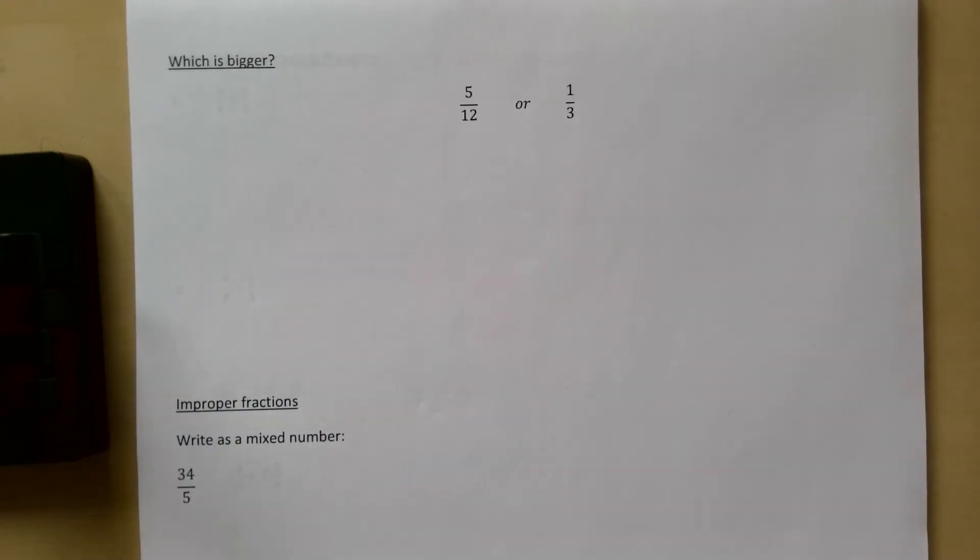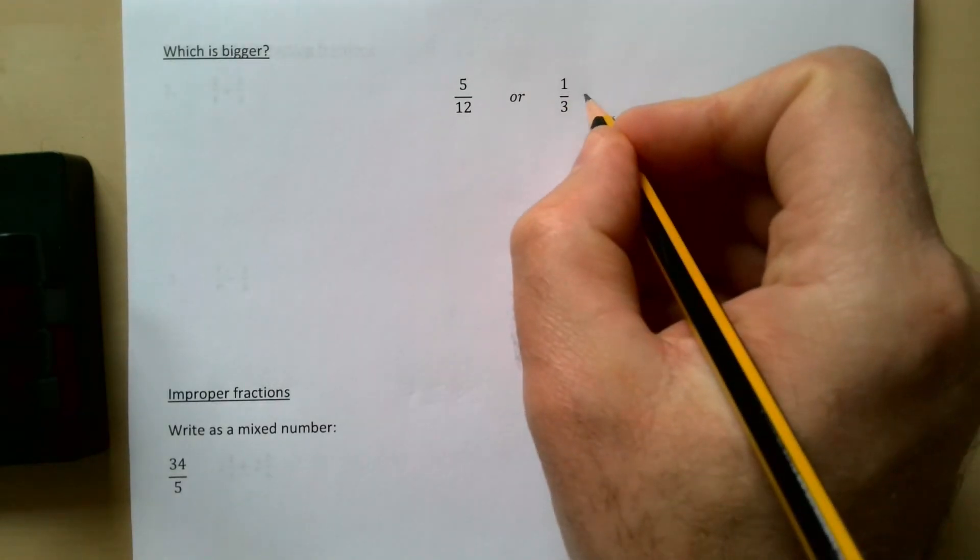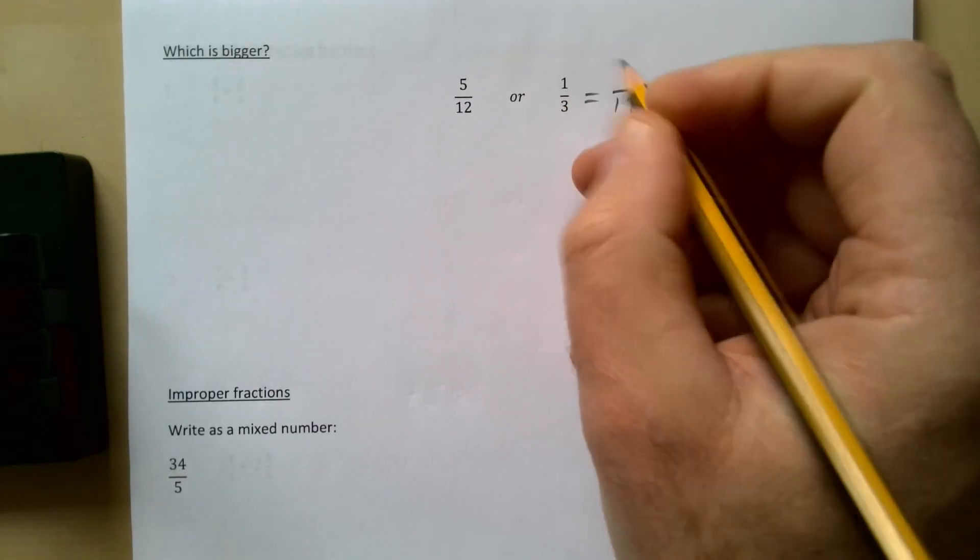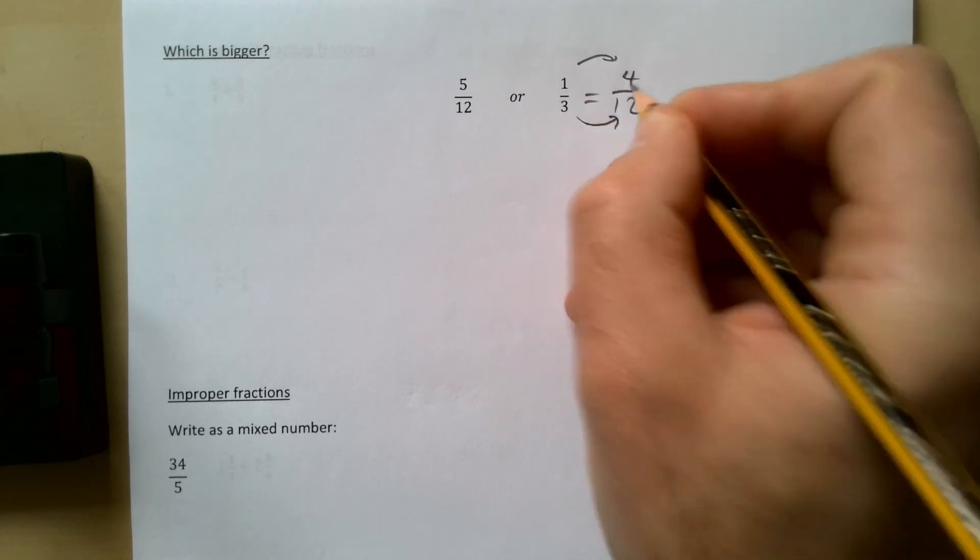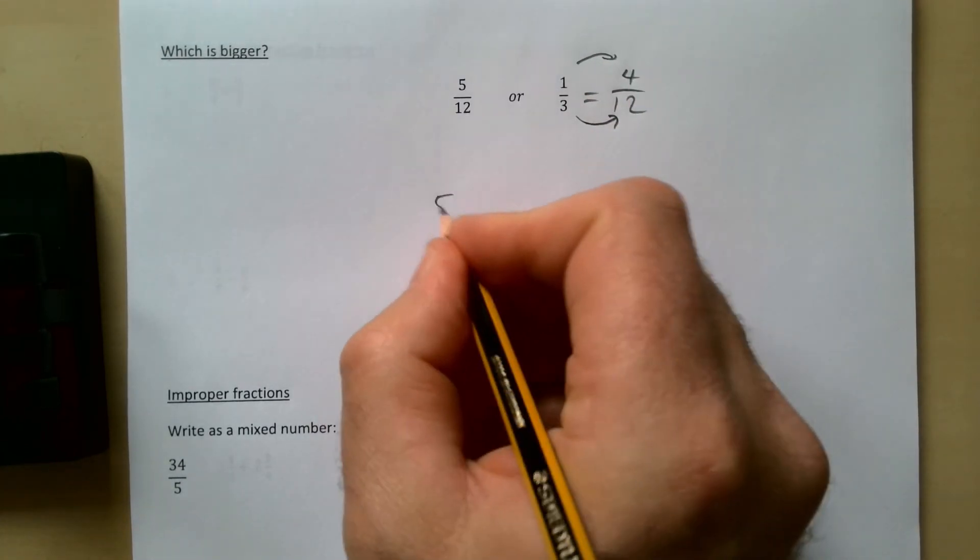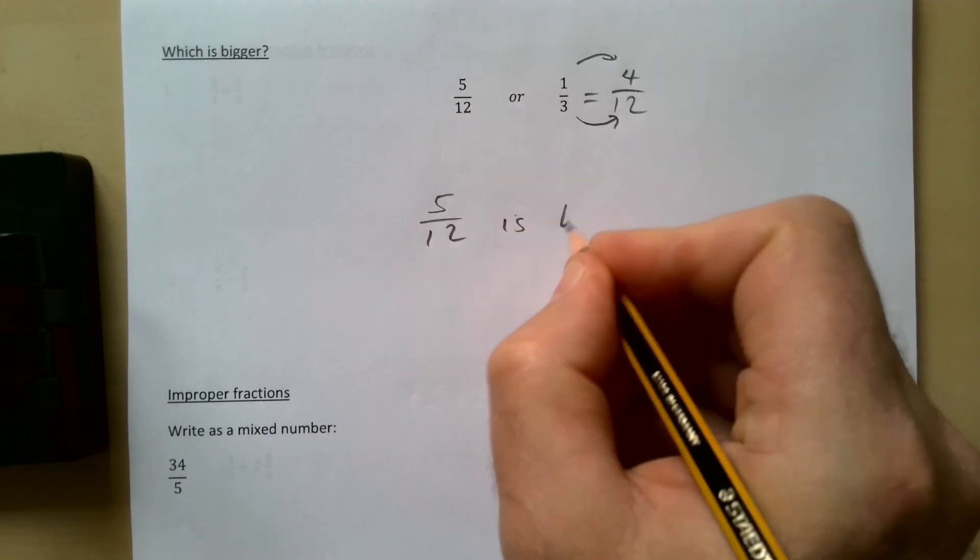Which is bigger: 5/12 or a third? We would need to change it so it's the same denominator. So a third is equal to how many twelfths? We've times that by 4, so we're going to times that one by 4, so it's 4/12. So that means that 5/12 is bigger.